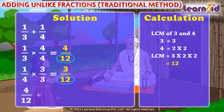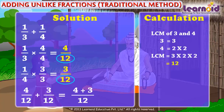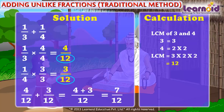Add them: 4 by 12 plus 3 by 12 is equal to 4 plus 3 by 12. 4 plus 3 is equal to 7. So, 1 by 3 plus 1 by 4 is equal to 7 by 12.